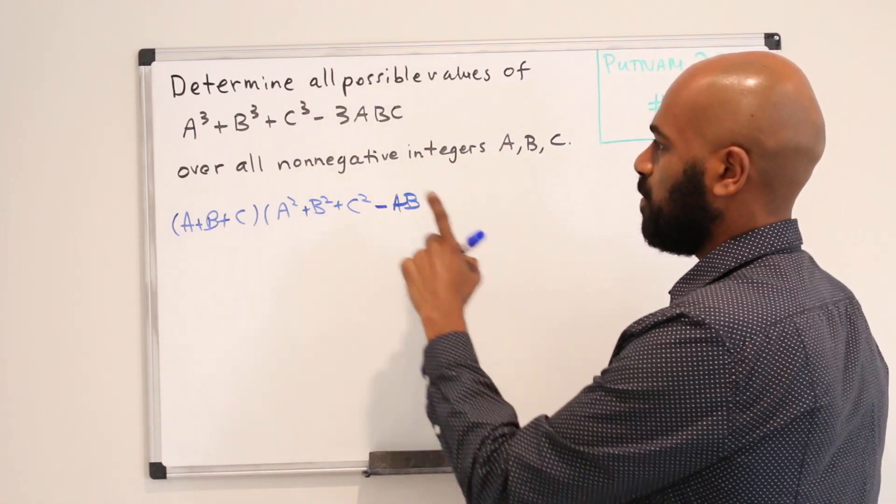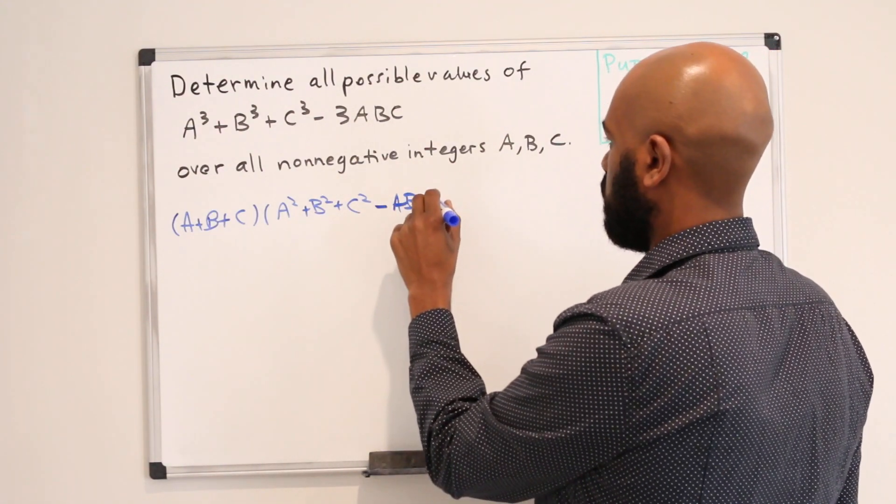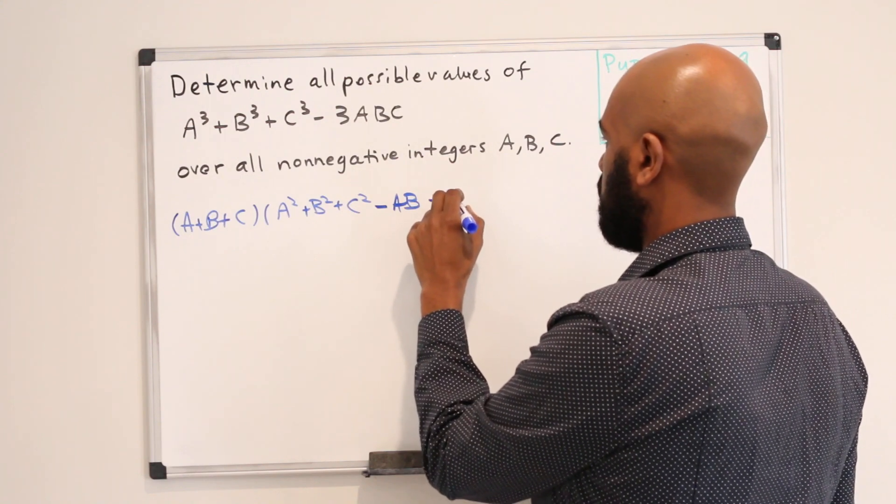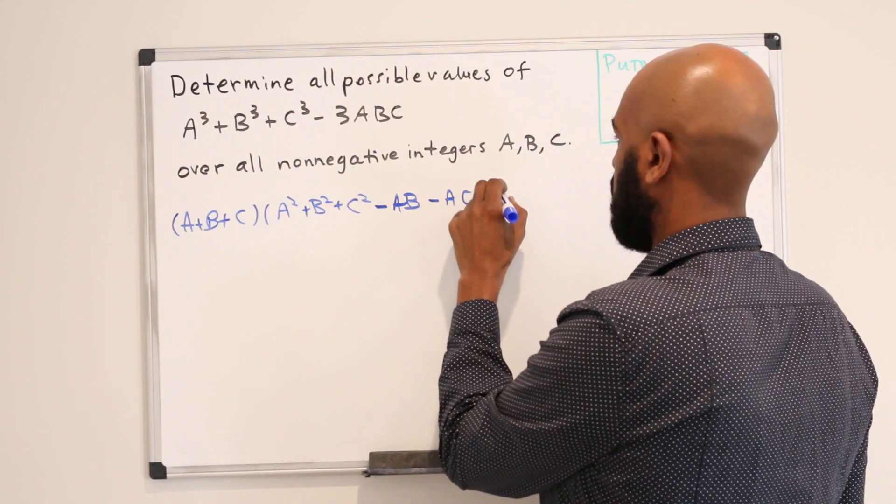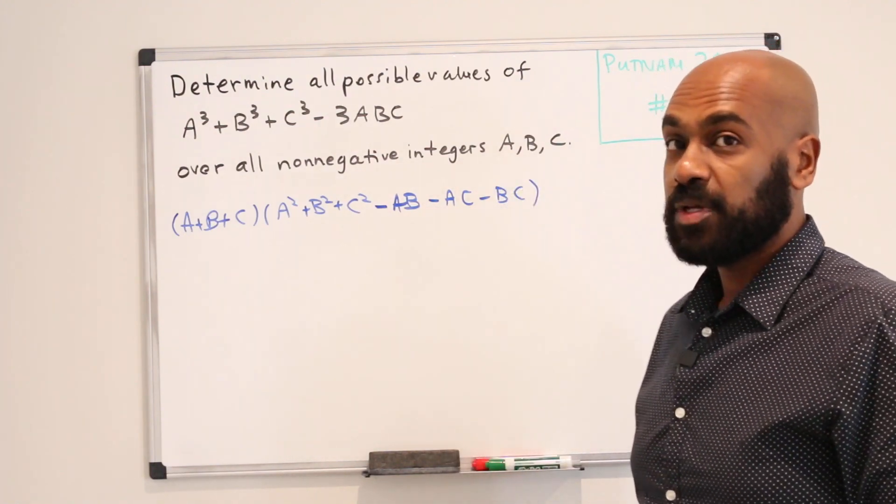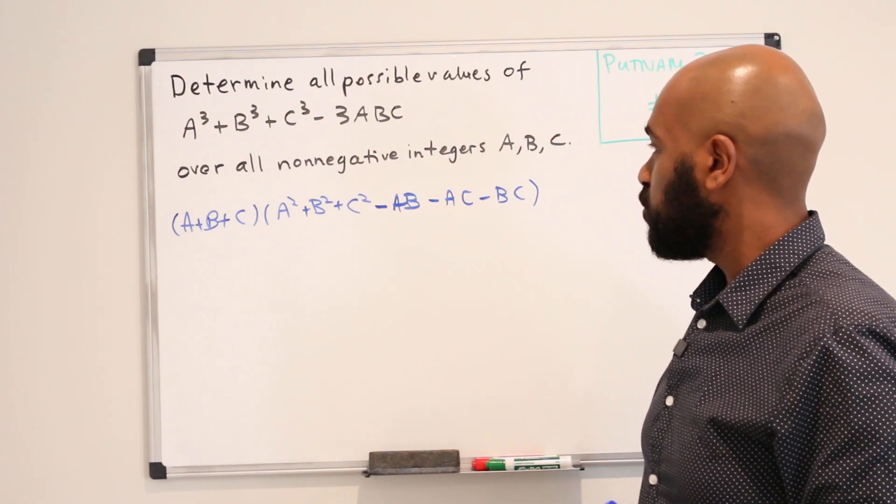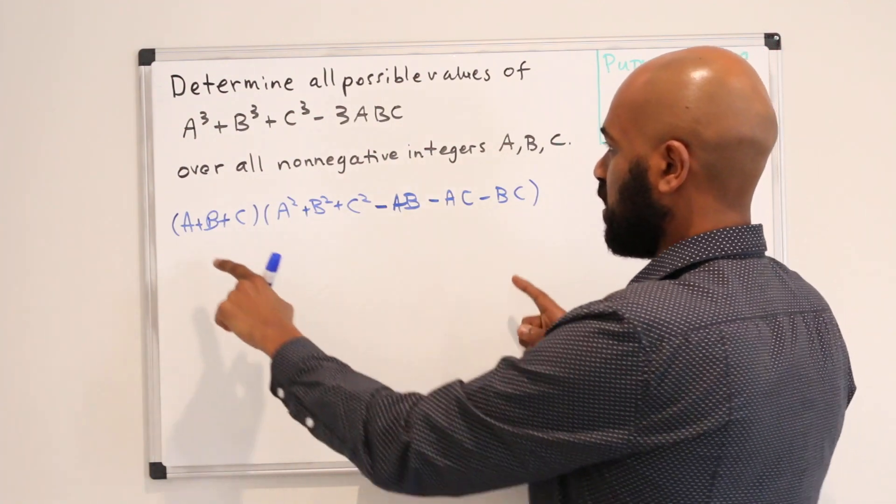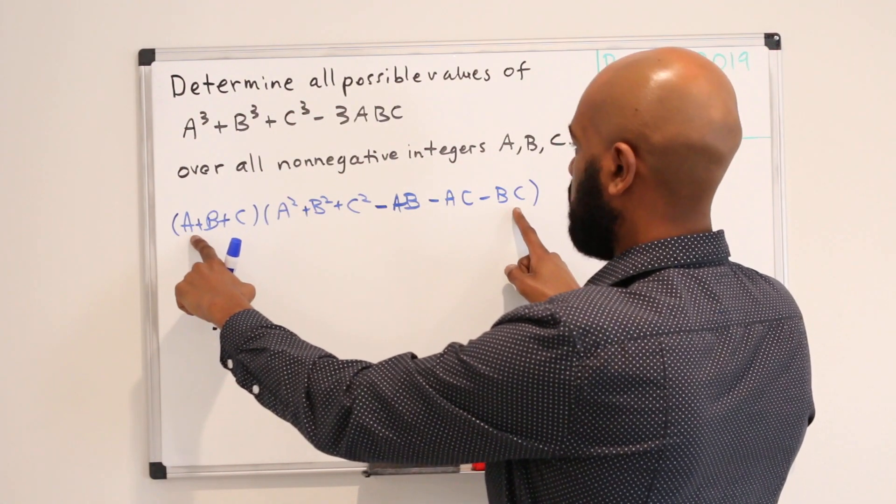Okay, and then by the symmetry of the variables we can subtract the products of all the variables. And now by doing that we get rid of all these cross terms except we introduce three new terms A times negative BC, B times negative AC, and C times negative AB.